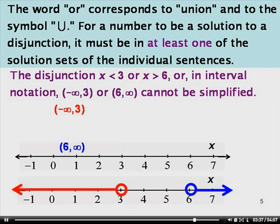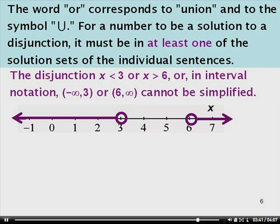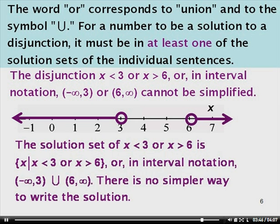Here's our interval negative infinity to 3 which corresponds to the inequality x is less than 3. Here's the graph of the interval 6 to infinity which corresponds to the inequality x is greater than 6. When we put our two graphs together, we have two separate intervals, so our disjunction cannot be simplified. The solution set of x is less than 3 or x is greater than 6 is the set of all x such that x is less than 3 or x is greater than 6. Or in interval notation, we can write this as the open interval negative infinity to 3 union the open interval 6 to infinity.